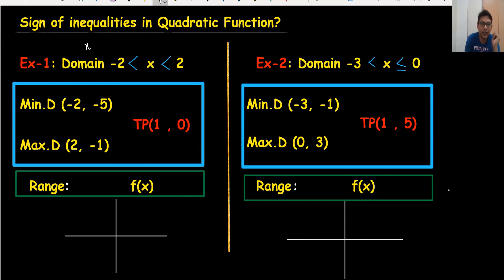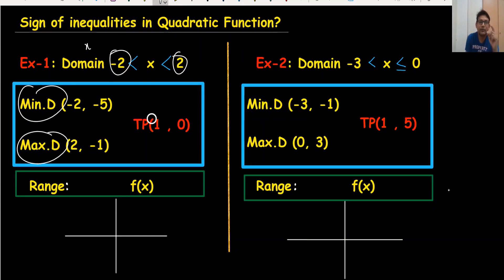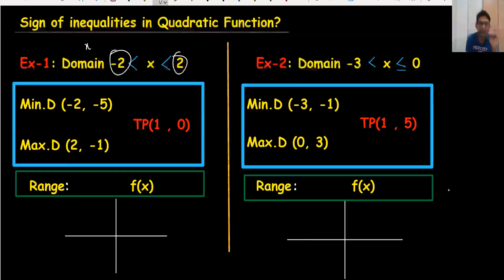First, with the minimum domain, which is here, maximum domain, which is here, and the turning point — the most important part in quadratic functions. So we normally have three coordinates to find the range. Same here, we have the domain minus two to zero: maximum and minimum domain and the turning point.